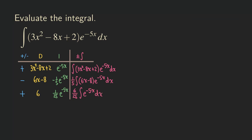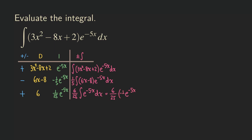We can stop here because this is an integral we can evaluate directly. You could go one more row down to 0, but it's unnecessary. Integrating (6/25)e^(−5x) dx gives (6/25) × (−1/5)e^(−5x), which simplifies to (−6/125)e^(−5x).